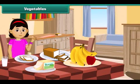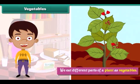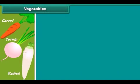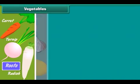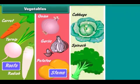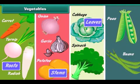We get our food from plants. The various parts of a plant are eaten as vegetables. The various plant parts are roots, stem, leaves and seeds. Carrots, turnips and radish are roots. Potatoes, onions and garlic are stems. Spinach and cabbage are leaves. Peas and beans are seeds.